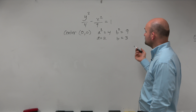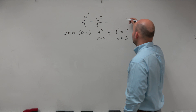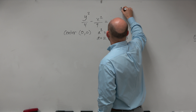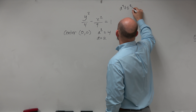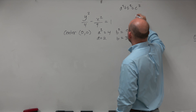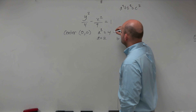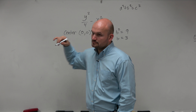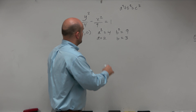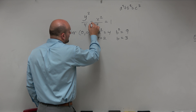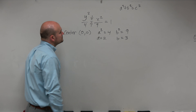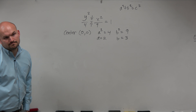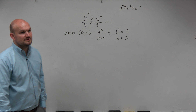We know if we're going to find our foci, we need to find c. So we have a squared plus b squared equals c squared. How do you know that this is a hyperbola? It's a little plus — basic difference.